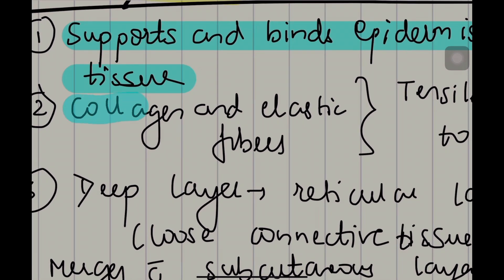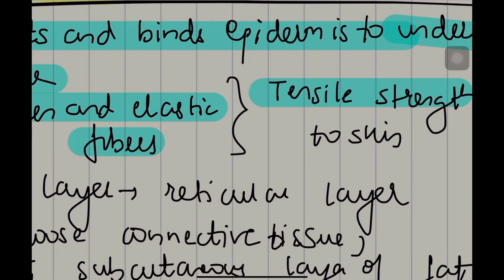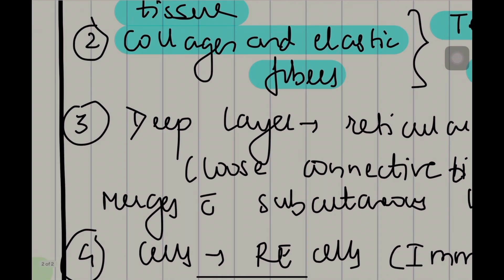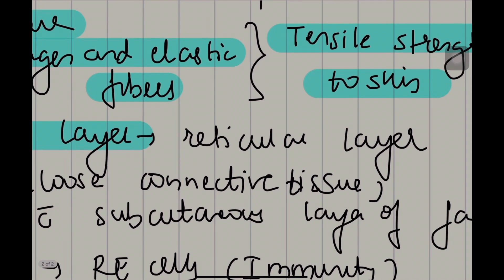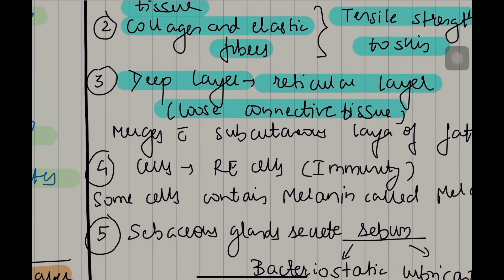The deep layer of the dermis is called the reticular layer. It is basically made of loose connective tissue. It merges with the subcutaneous layer of fat. Now let's see the cells in the dermis.